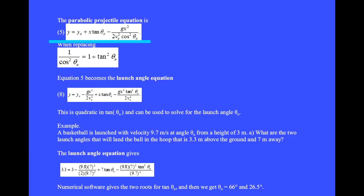The parabolic relation between x and y was equation 5. When replacing 1 over cosine squared with 1 plus tan squared, this becomes the launch angle equation, equation 8. This is quadratic in tan θ and can be used to solve for the launch angle θ₀.